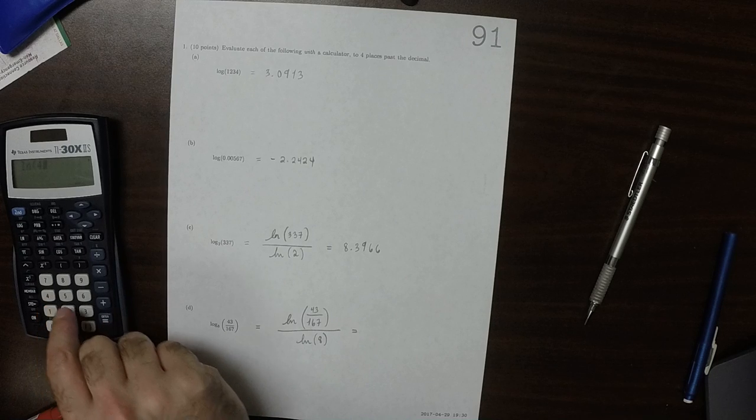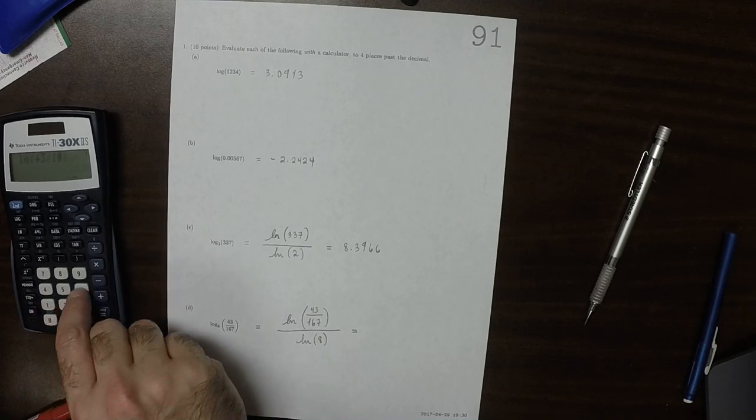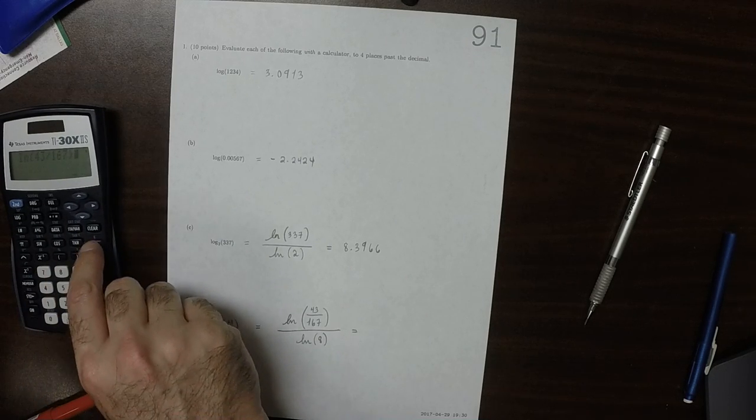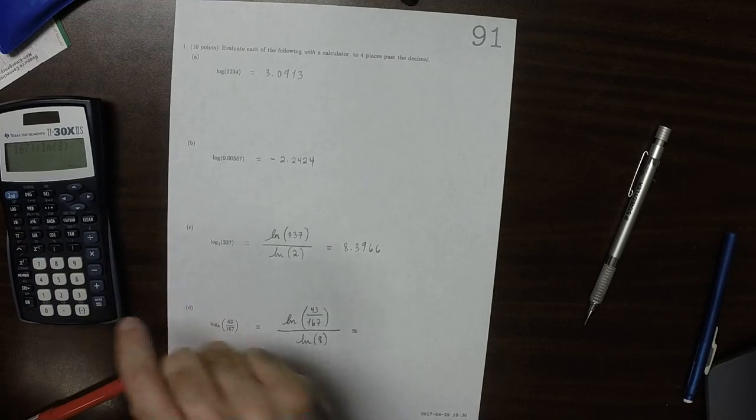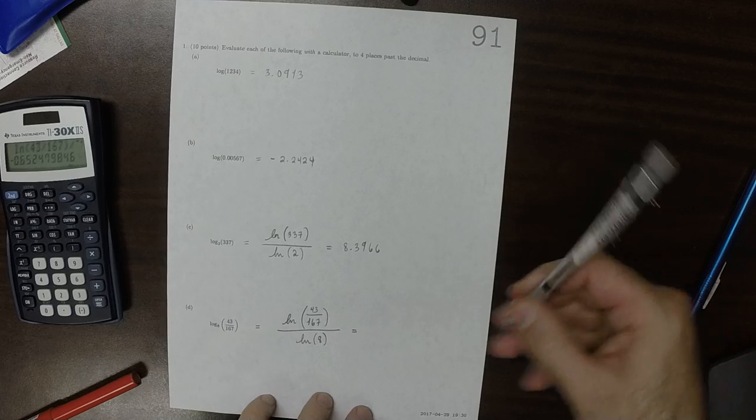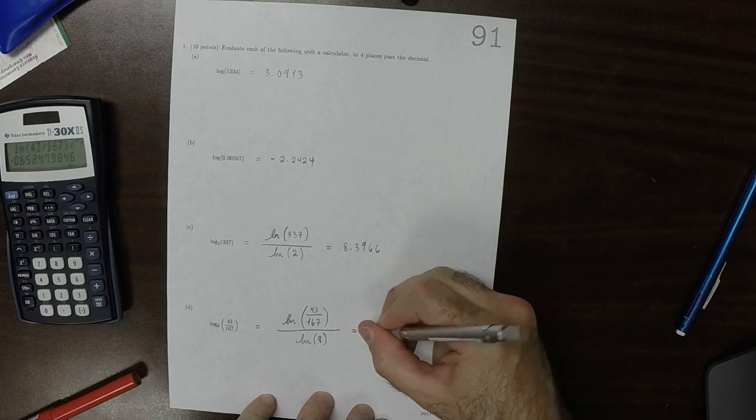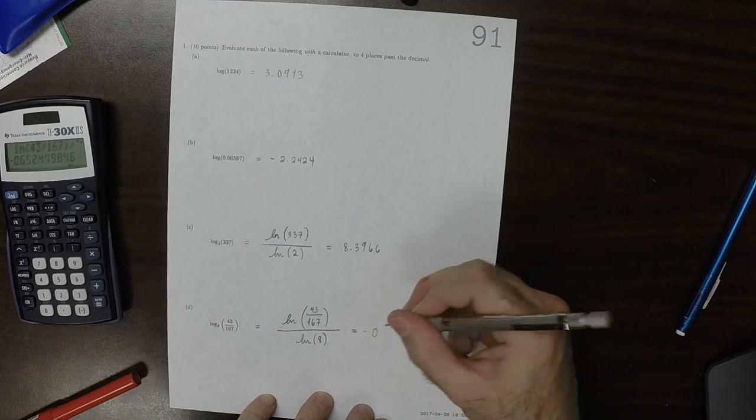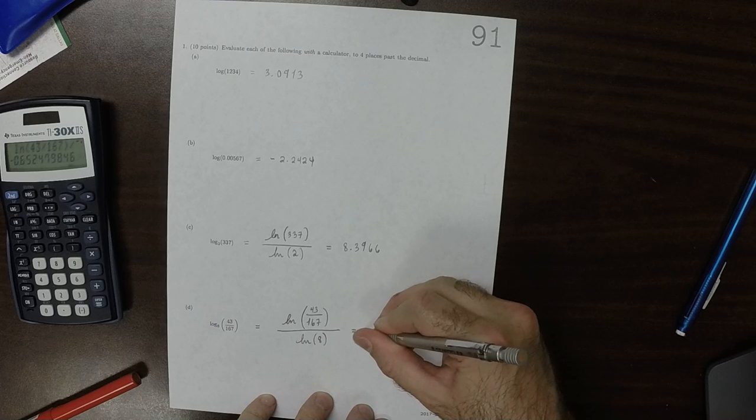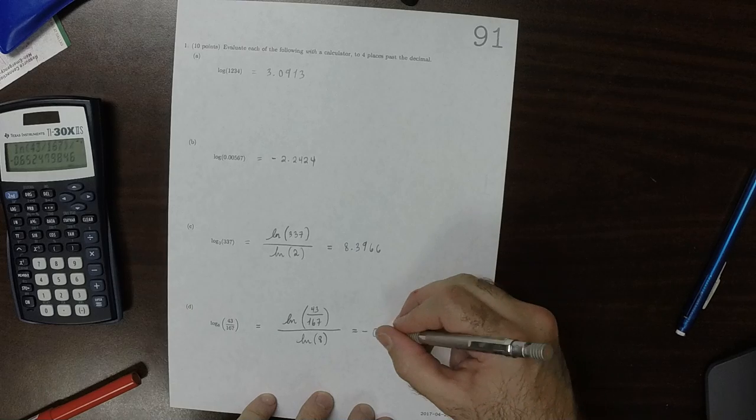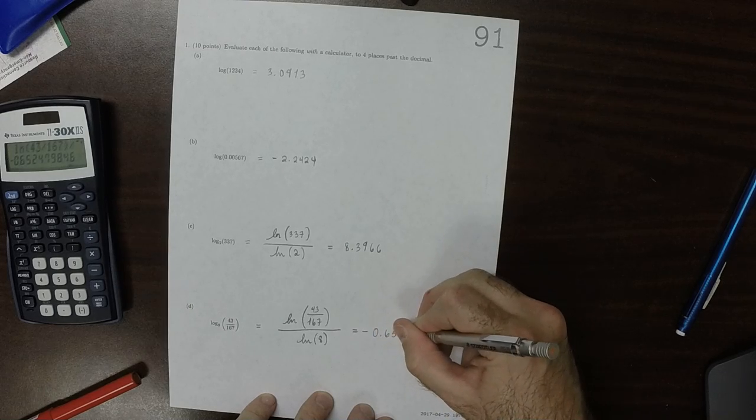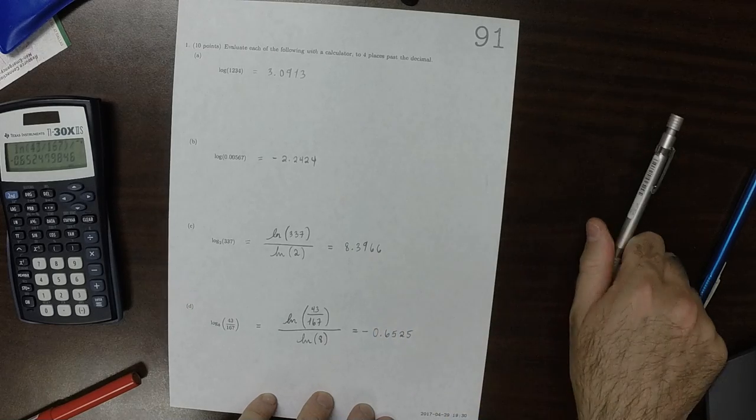So natural log of 43 divided by 167. Natural log of 8. That is negative 0.6525. Round it to 4 places past the decimal.